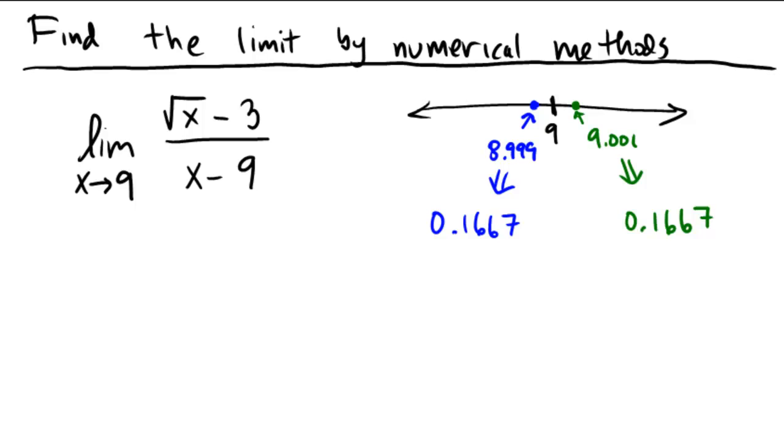So what this is indicating to us is that the limit of the function, although you cannot literally stick in 9, it looks like we're getting pretty close to, I only did 4 decimal places here, but it's probably getting close to 0.166666, which means that the limit here must be 1 sixth, or it seems to be getting close to 1 sixth.